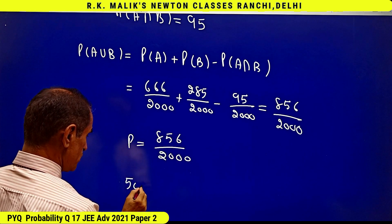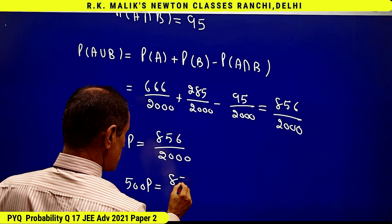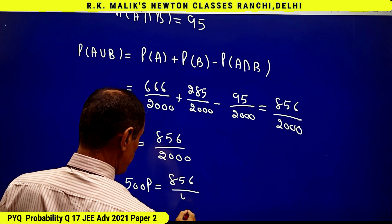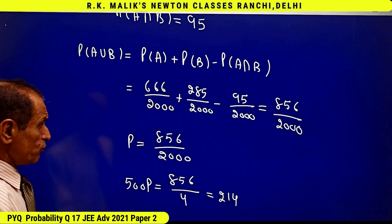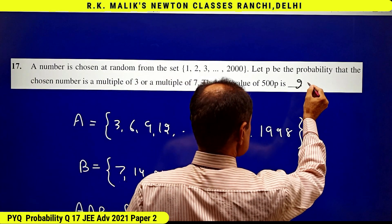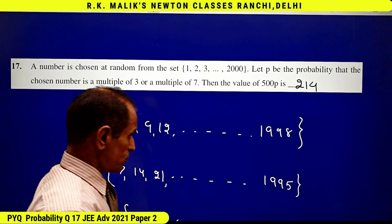That is, 500p will become 856 by 4. That is 214. Hence the answer to this question is 214.